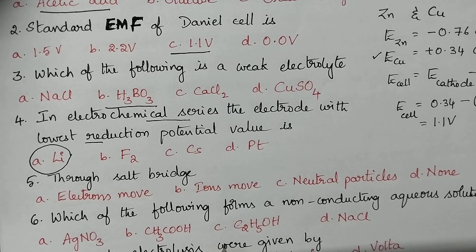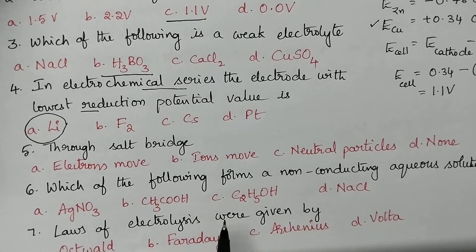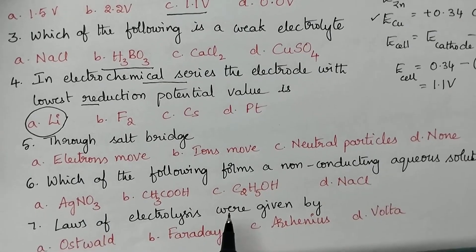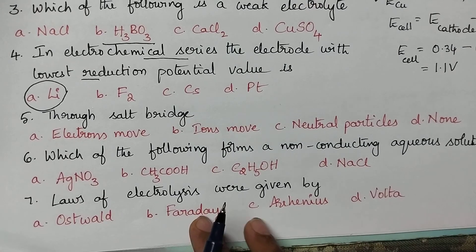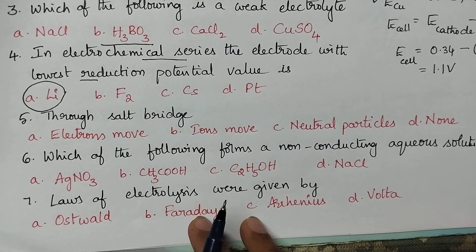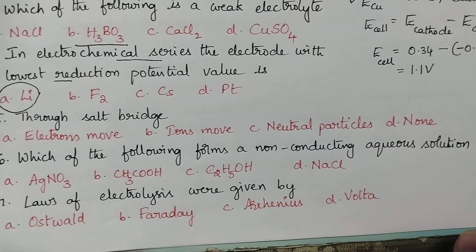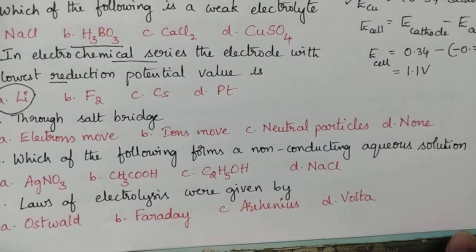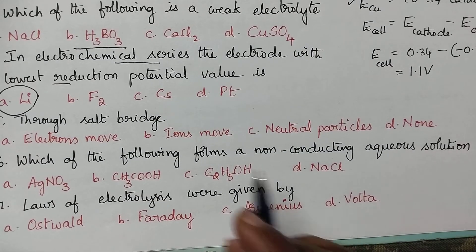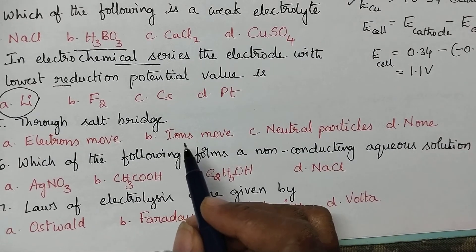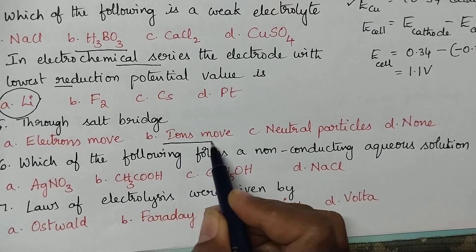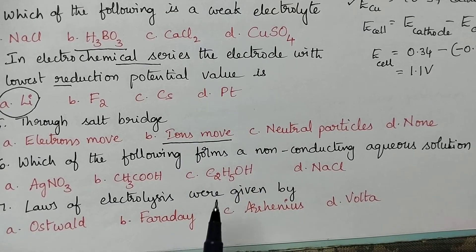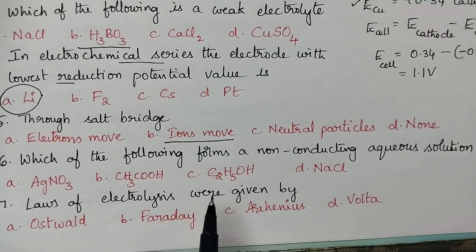What is the importance of the salt bridge? The salt bridge is mainly used to maintain electrical neutrality at the electrodes. This is made possible by the flow of ions — through the salt bridge, ions move to maintain electrical neutrality at the electrodes.